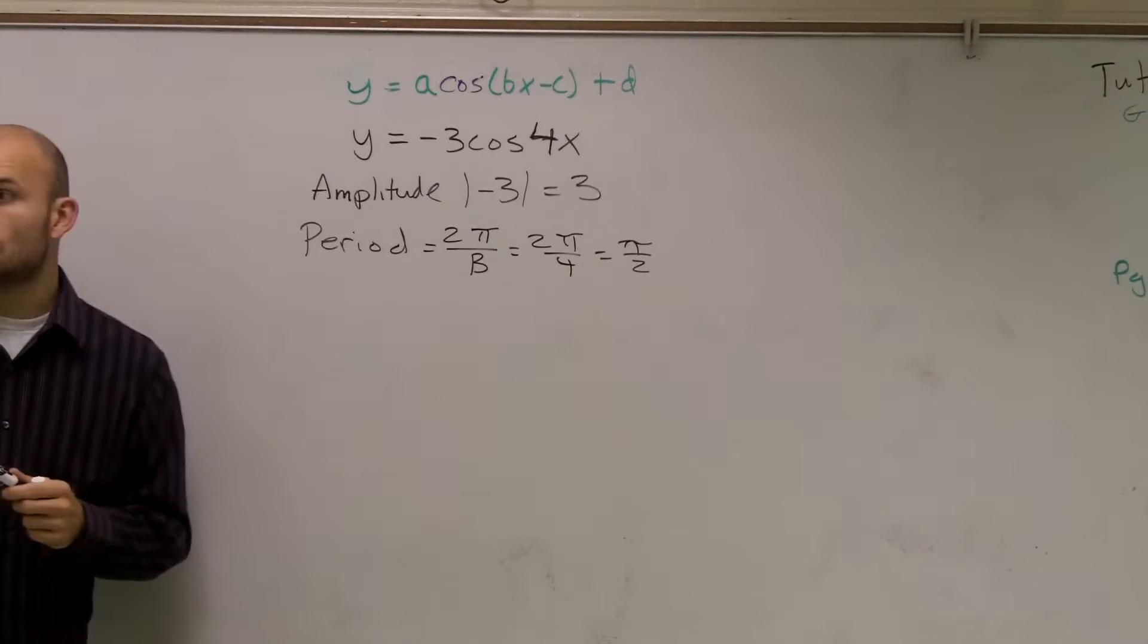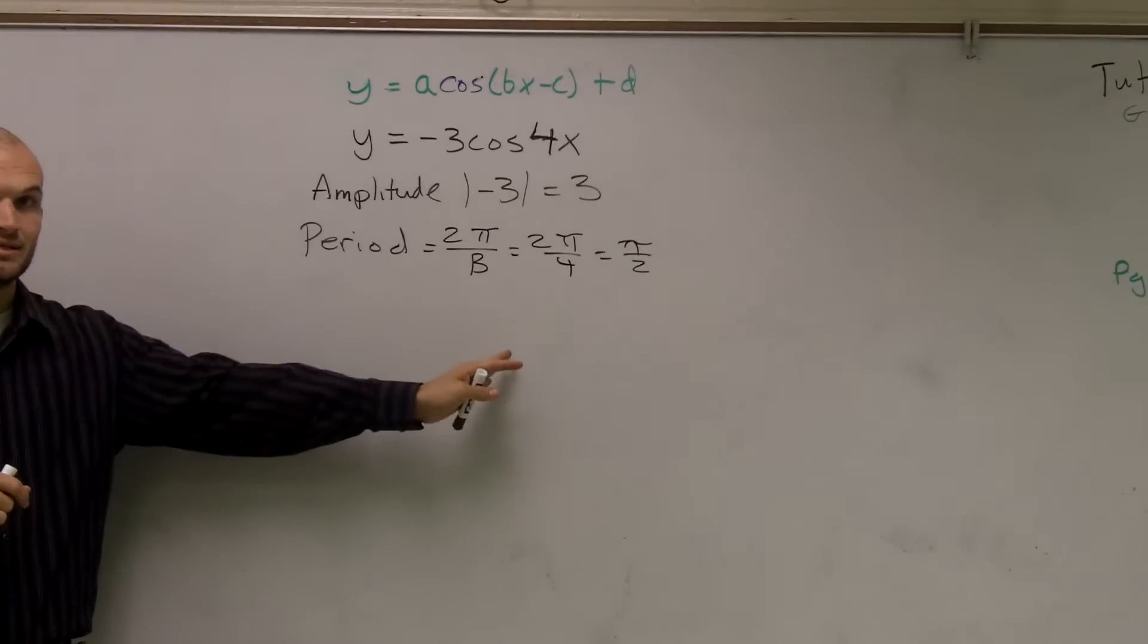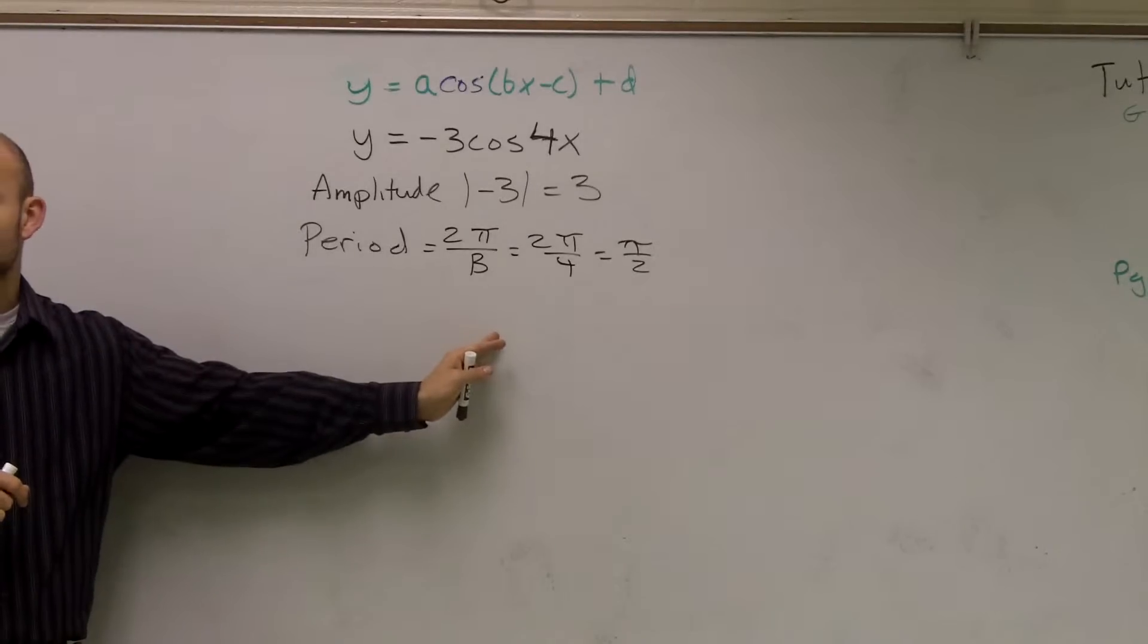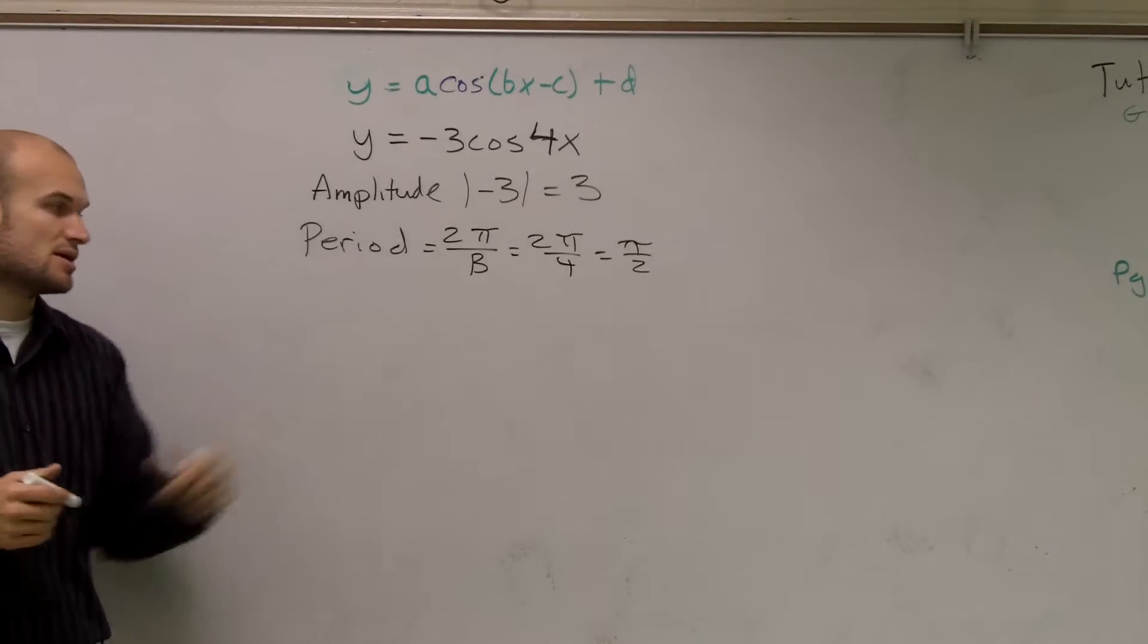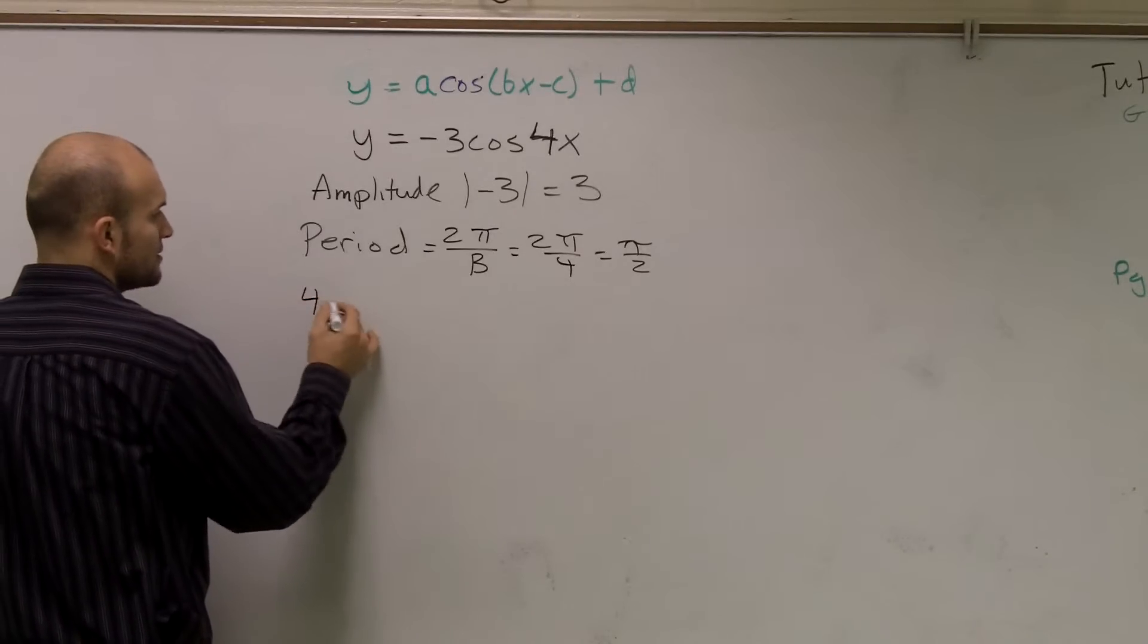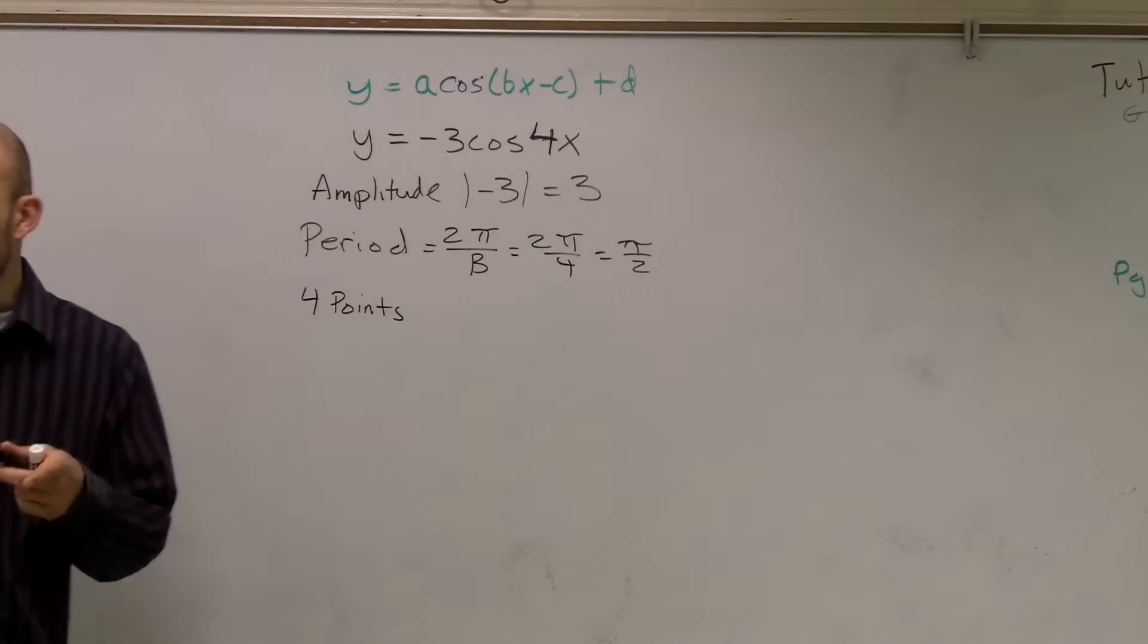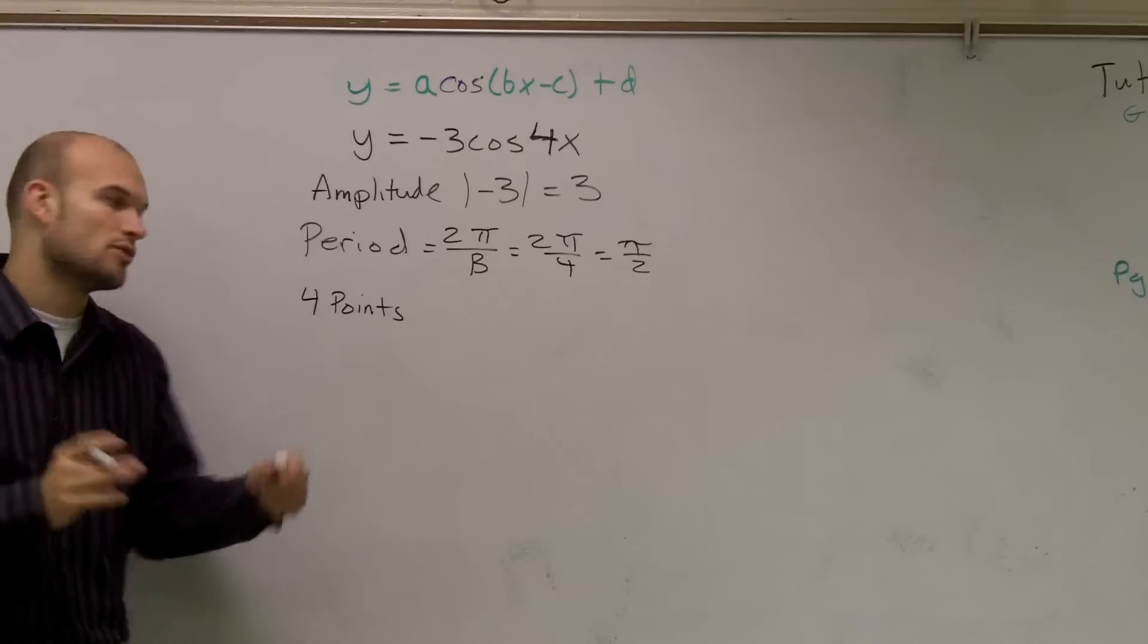It would be helpful to also know, for a cosine graph, we have four important points. We have two x-intercepts. We have our minimum, and we also have the end of the cycle. So it's helpful to write your four important points in one cycle.